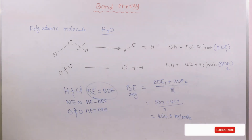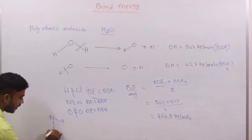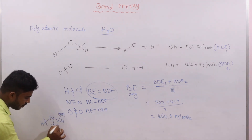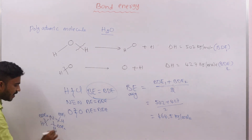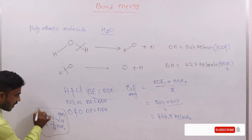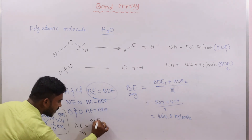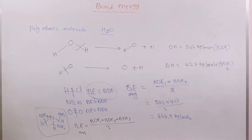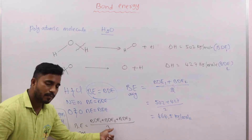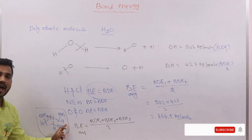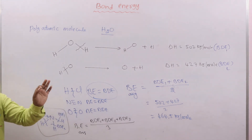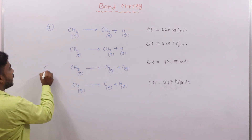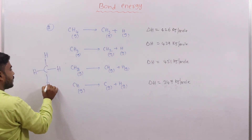For example, if you have NH₃, each bond has its own bond dissociation energy — bond dissociation energy 1, bond dissociation energy 2, and bond dissociation energy 3. The bond energy for the N–H bond in NH₃ is the average: (BDE₁ + BDE₂ + BDE₃) / 3. Bond energy is the average value of all the bond dissociation energies present in the polyatomic molecule.